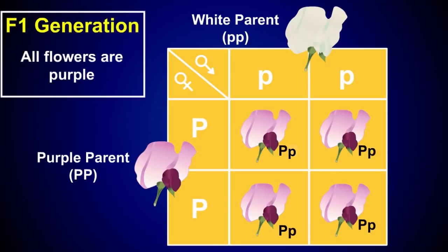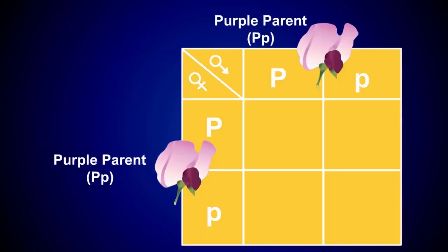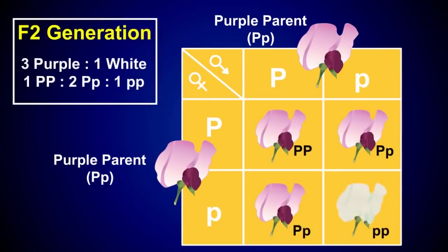Two heterozygous purple plants from the F1 generation can be crossed to produce an F2 generation. In the F2 generation, three purple pea plants are produced for each white pea plant. Therefore, purple and white phenotypes are produced in a 3 to 1 ratio.